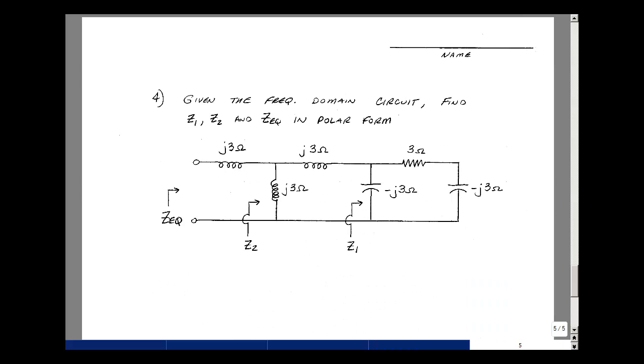And the fourth problem is given the following frequency domain circuit, made up of inductors, capacitors, and a resistor. Can you find the impedances Z1? That's the impedance looking into these two terminals, looking back, in polar form. And the same thing then for Z2, looking back from these terminals, over here. And then lastly, can you find Z equivalent? That's looking into these terminals right here.